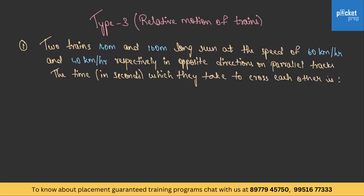We are done with category 2. Let us jump into the problems of category 3. The first question: Two trains, 140 meters and 160 meters long, run at speeds of 60 km per hour and 40 km per hour respectively in opposite directions on parallel tracks. We need to find the time in seconds which they take to cross each other.